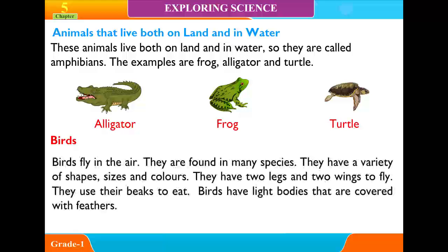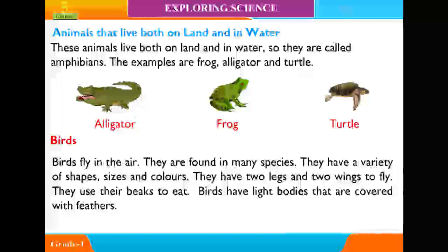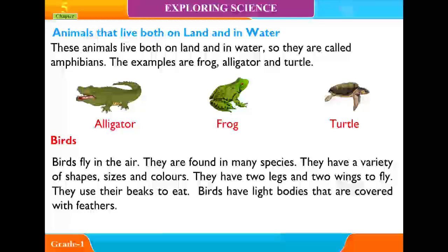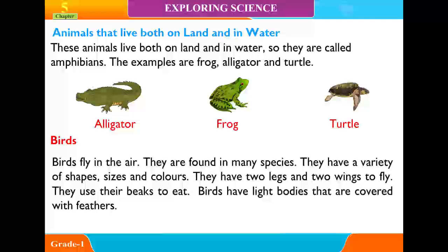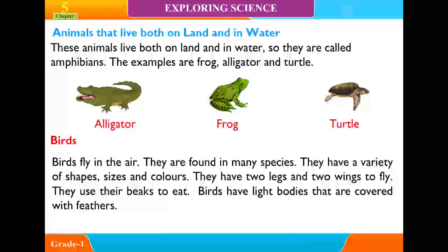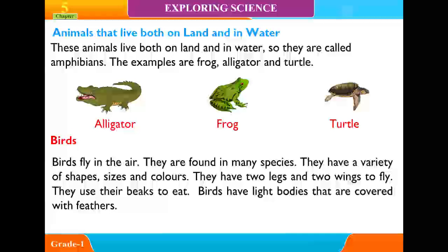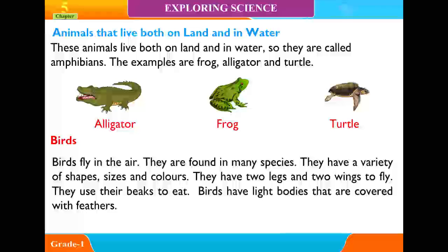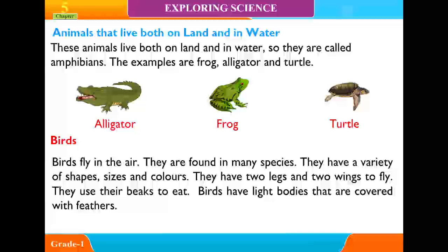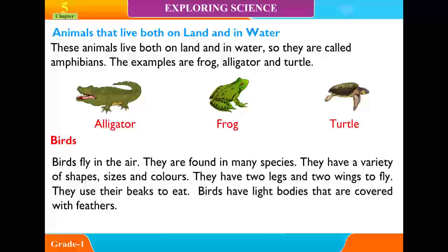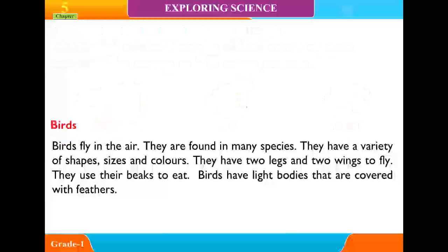Birds fly in the air. They are found in many species. They have a variety of shapes, sizes and colors. They have two legs and two wings to fly. They use their beaks to eat. Birds have little bodies that are covered with feathers.